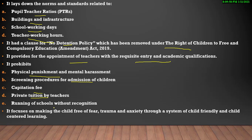Running of schools without recognition — जो schools बिना किसी authority की recognition के चल रही हैं — इन सब को prohibit किया गया है. It focuses on making the child free of fear, trauma and anxiety through a system of child-friendly and child-centered learning. जो prohibitions दिए हैं जैसे physical punishment और mental harassment — इसलिए किया गया है ताकि बच्चे fearlessly पढ़ सकें, school जाने से न कतराएं. These things have been prohibited so that बच्चे खुशी-खुशी school जाएं और अच्छे से पढ़ें, and all teaching becomes child-centered learning.